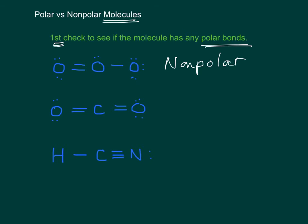For CO2, there's two polar bonds, and oxygen is more electronegative than carbon. So there's a polar bond there and a polar bond there. So this might be polar. We don't know. There's another step to look at.